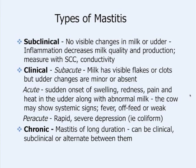Subclinical mastitis is a term for mastitis where we don't see any visual signs — no swelling, no changes in the milk. But it's very important because subclinical mastitis means there's an increase in the somatic cell count, which takes down the quality of the milk. White blood cells come into the udder and there are changes in milk secretion — it gets more salts, so conductivity changes. We don't see any visual signs with subclinical mastitis.